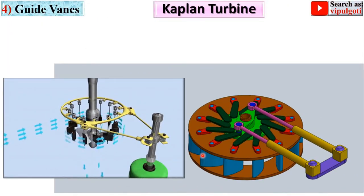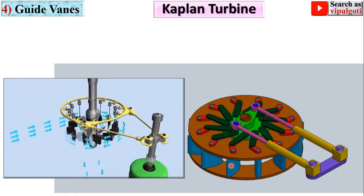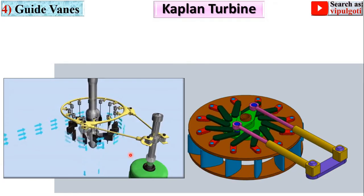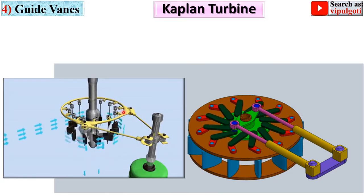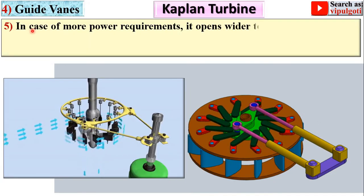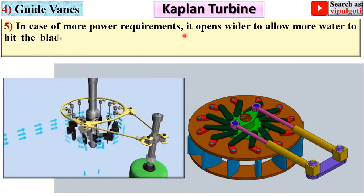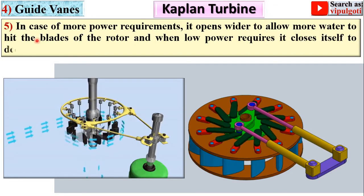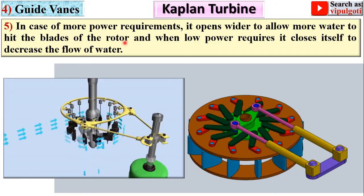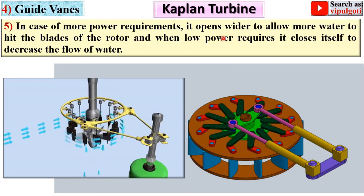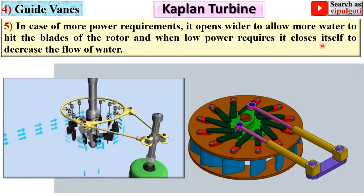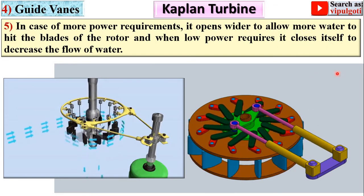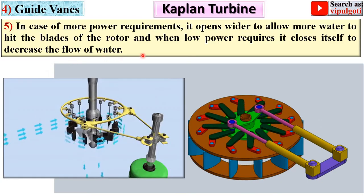The guide vanes are controlled by a mechanism. In case of more power requirement, they open wider to allow more water to reach the blades of the rotor. When low power is required, they close themselves to decrease the flow of water.